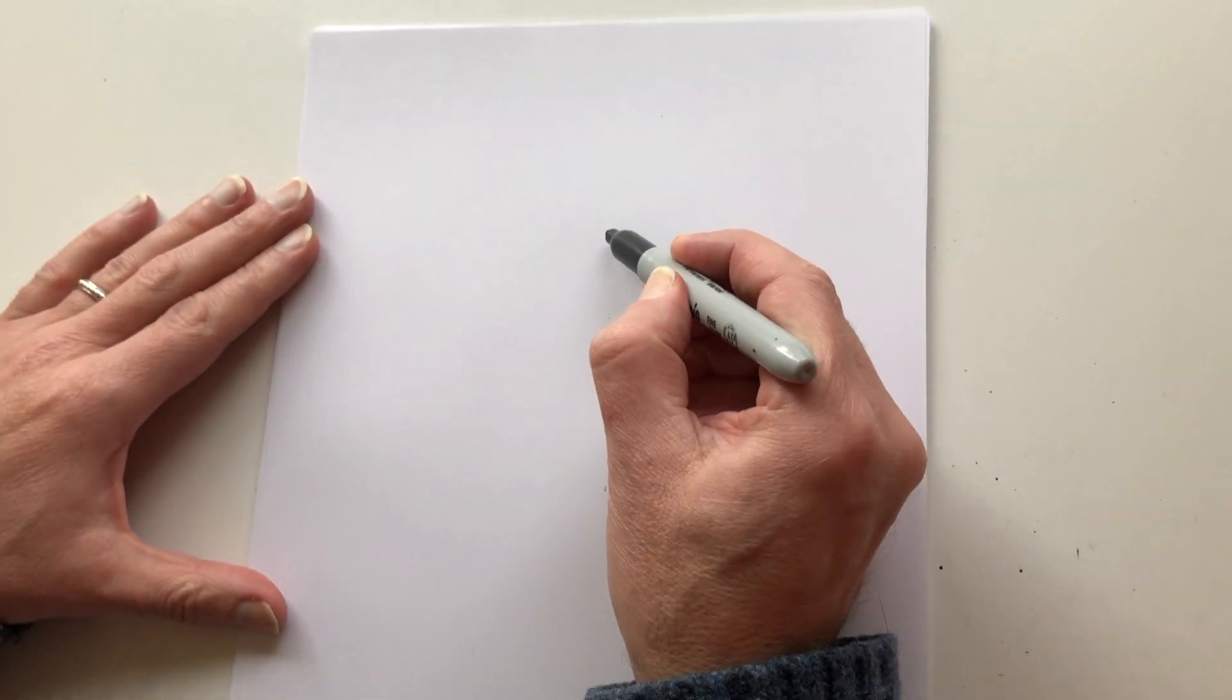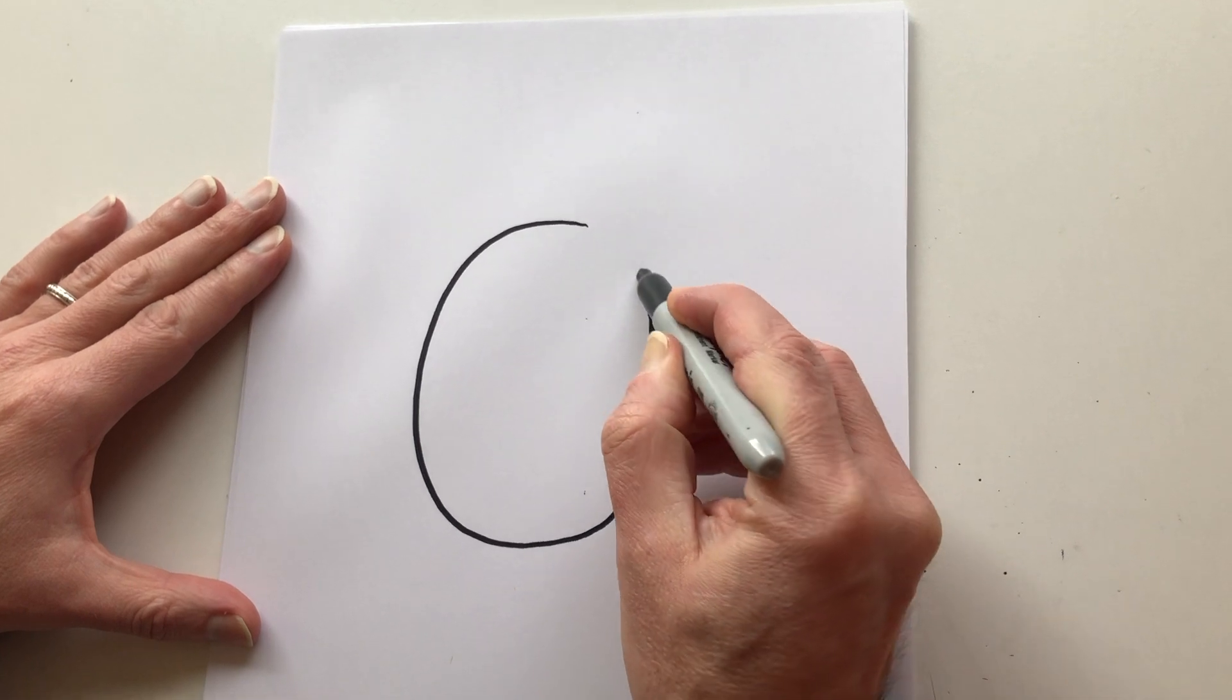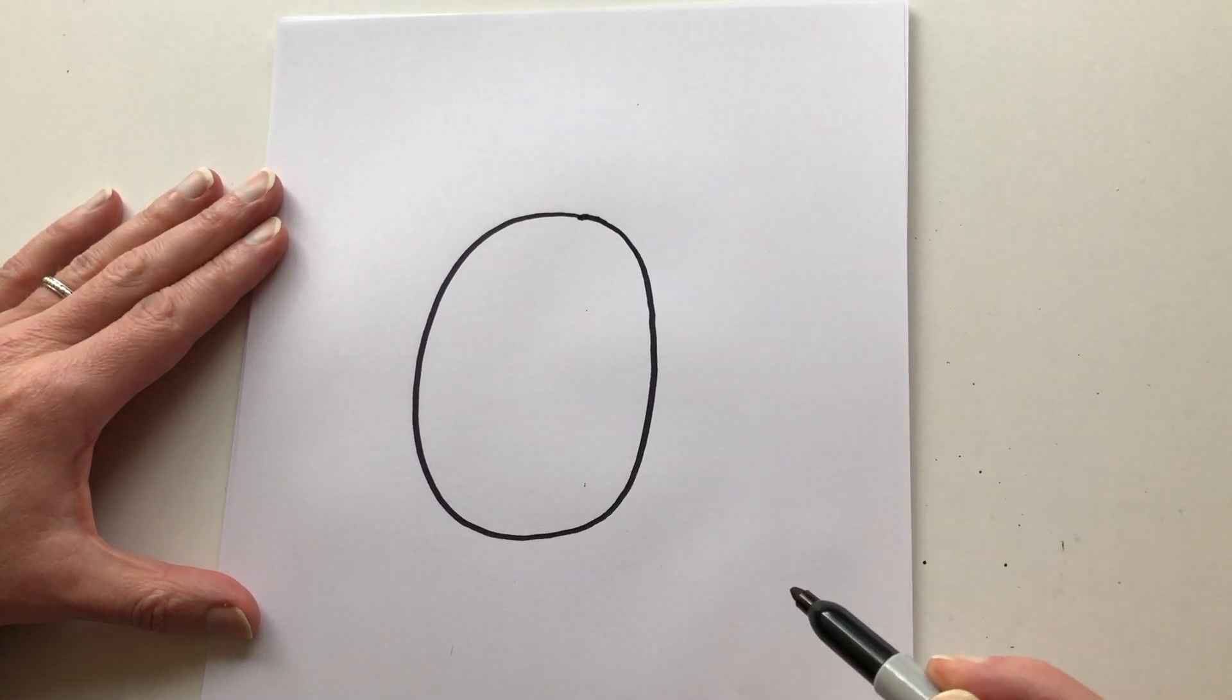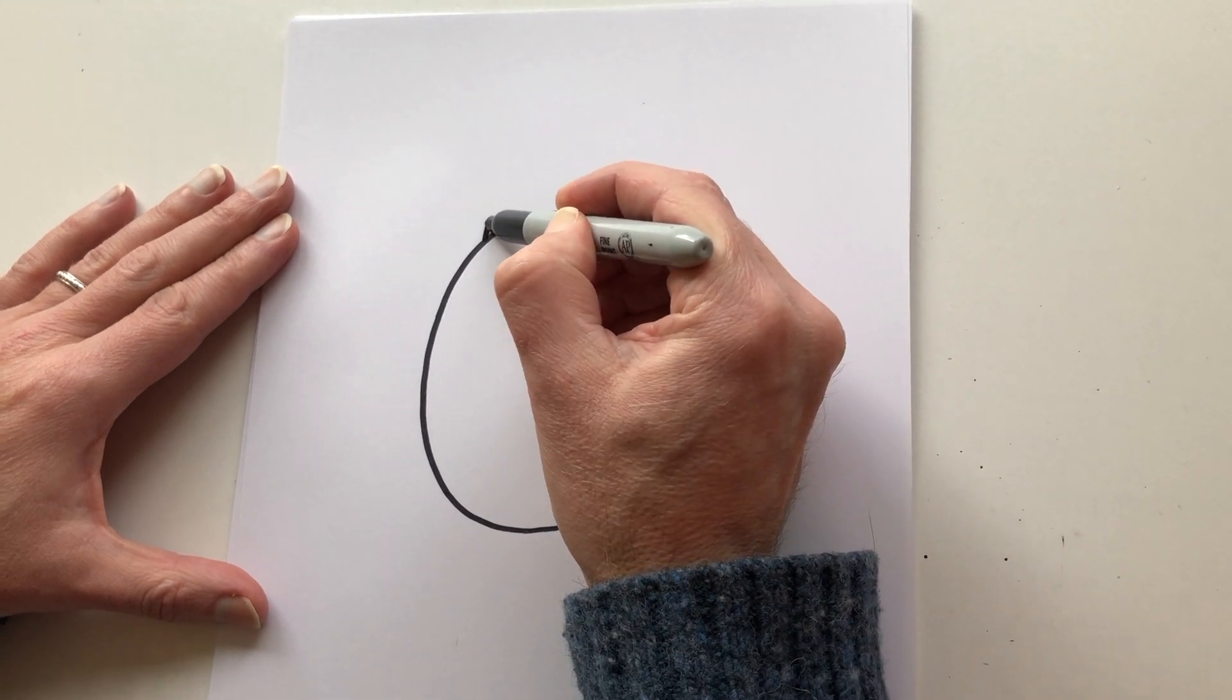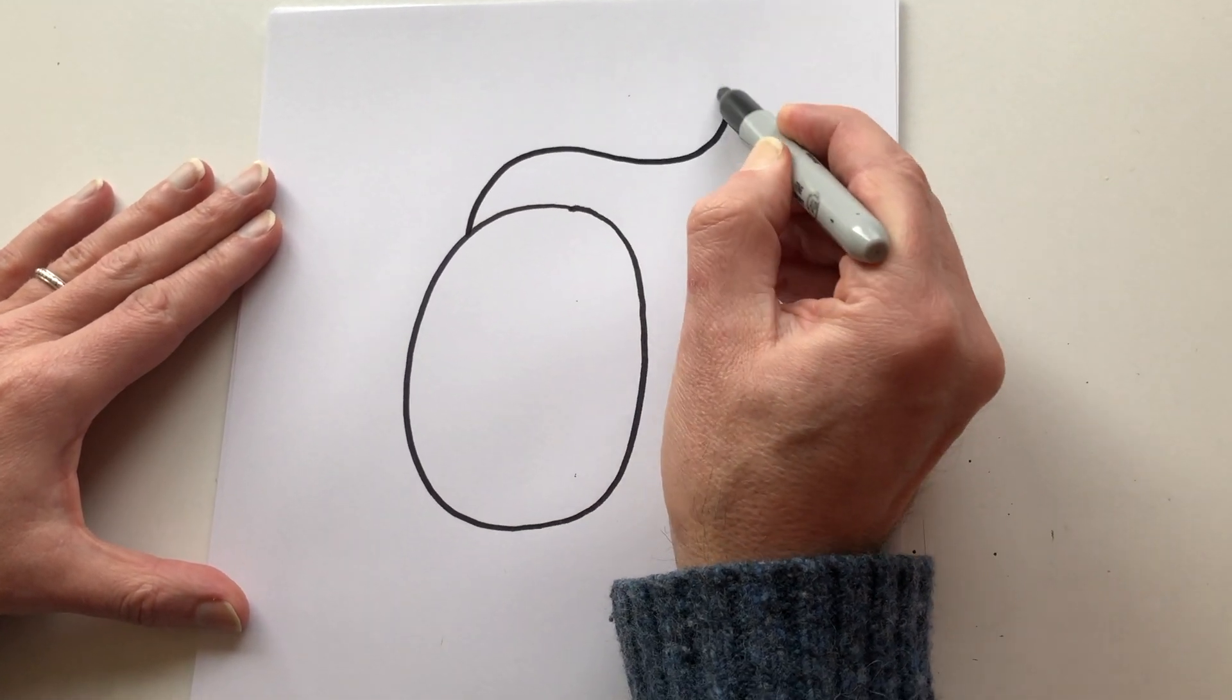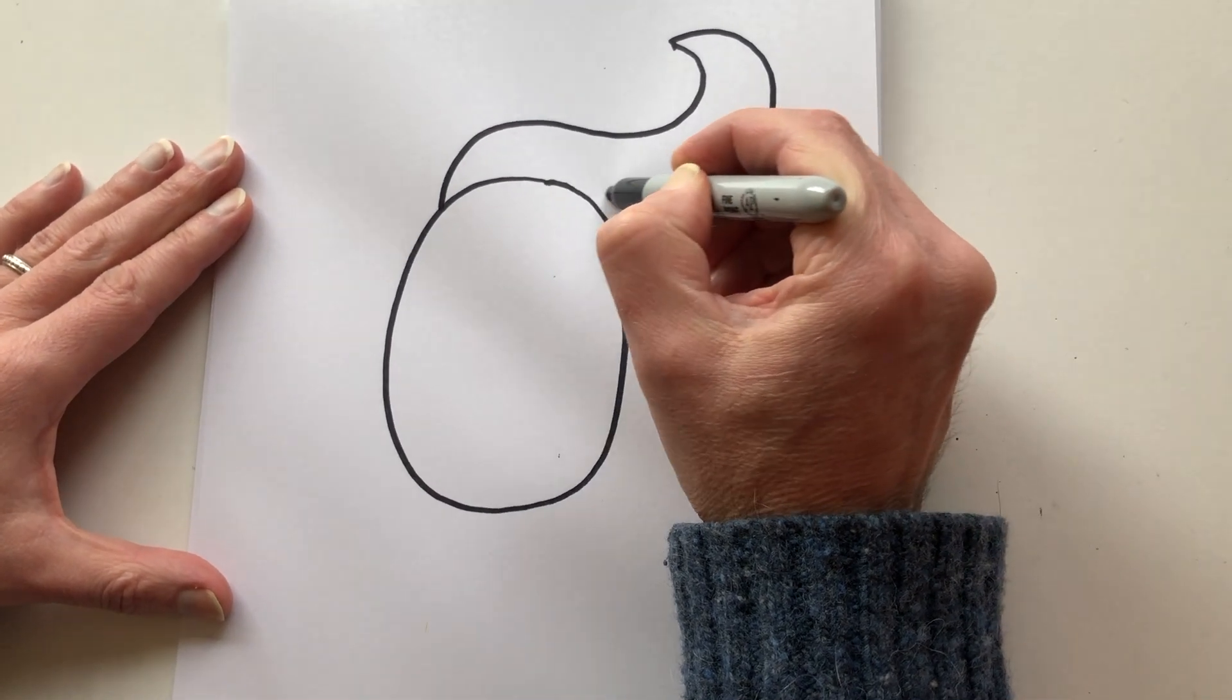Start by drawing an oval. Easy. Then, we're going to draw his hair. We start here on his head. Swoop over to the point. And then swoop back.